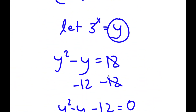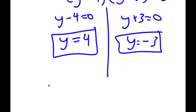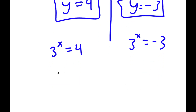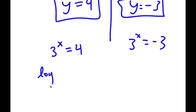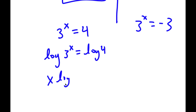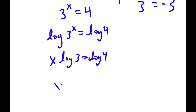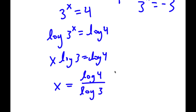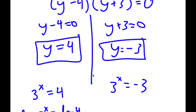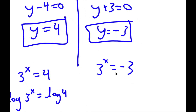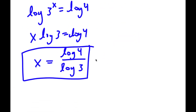Remember how we let 3 to the power of x equal y. So now I have 3 to the power of x is equal to 4, and 3 to the power of x is equal to negative 3. For 3 to the power of x equals 4, I'm going to take the log on both sides. So I get x times log 3 is equal to log 4, meaning x is equal to log 4 over log 3. Now for 3 to the power of x equals negative 3, you cannot take the power of a positive number and make it negative, so there's no solution for this. My only solution is log 4 over log 3.